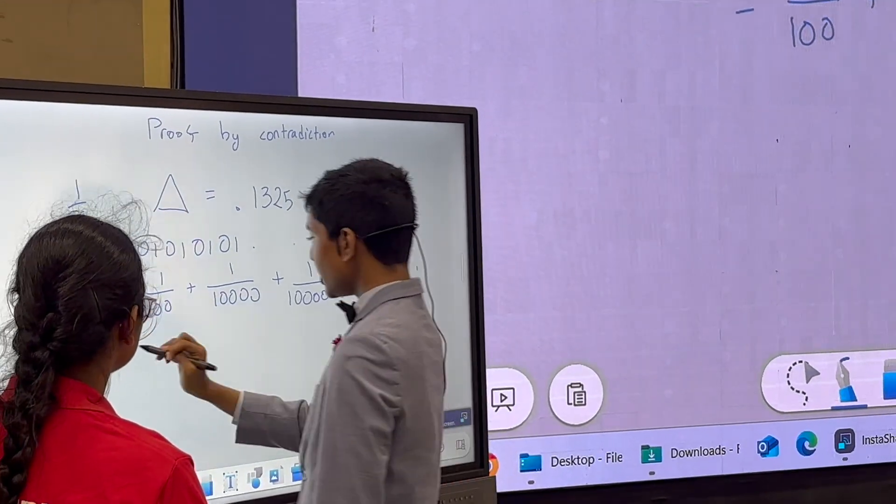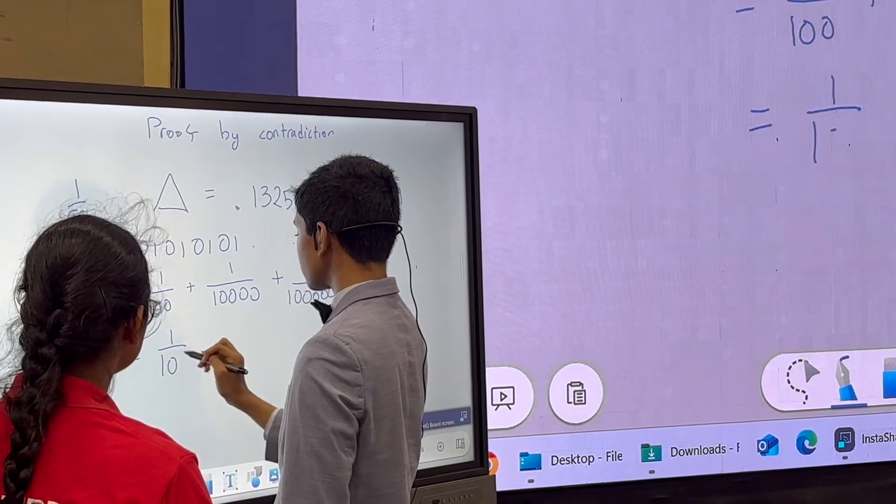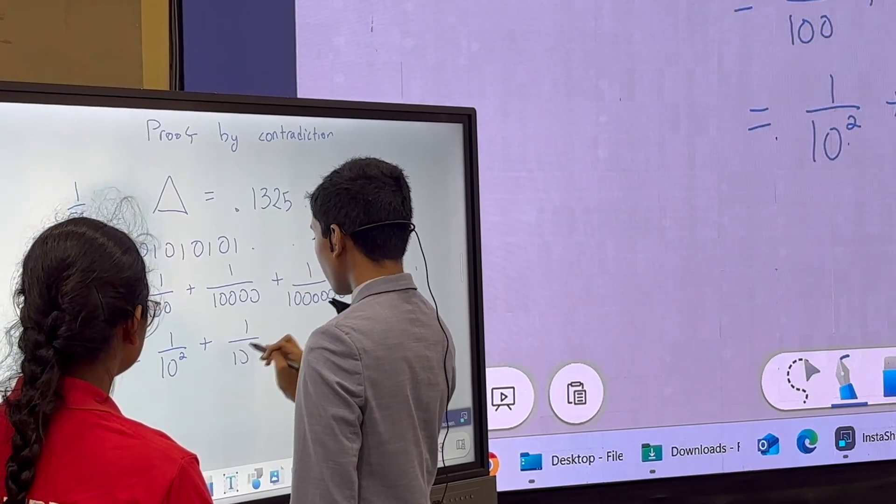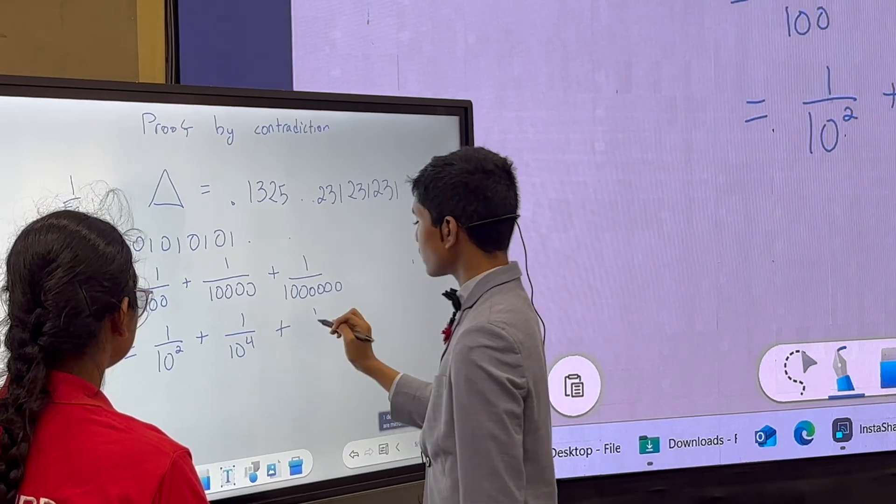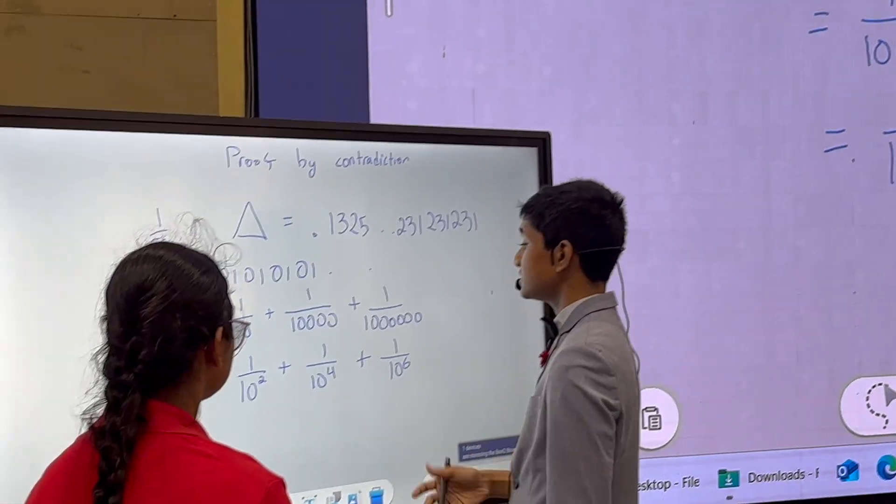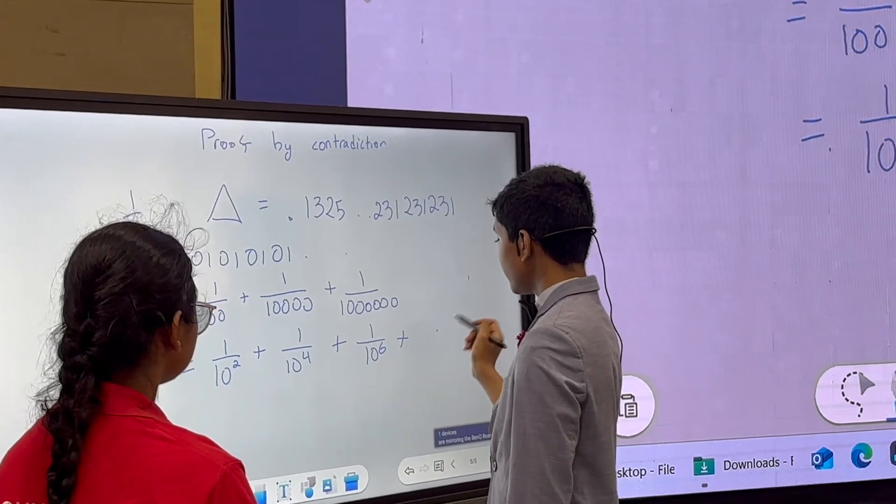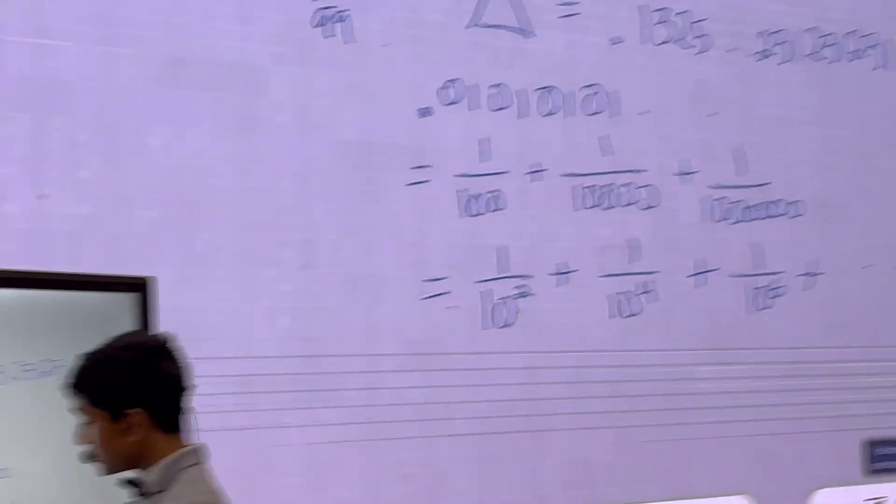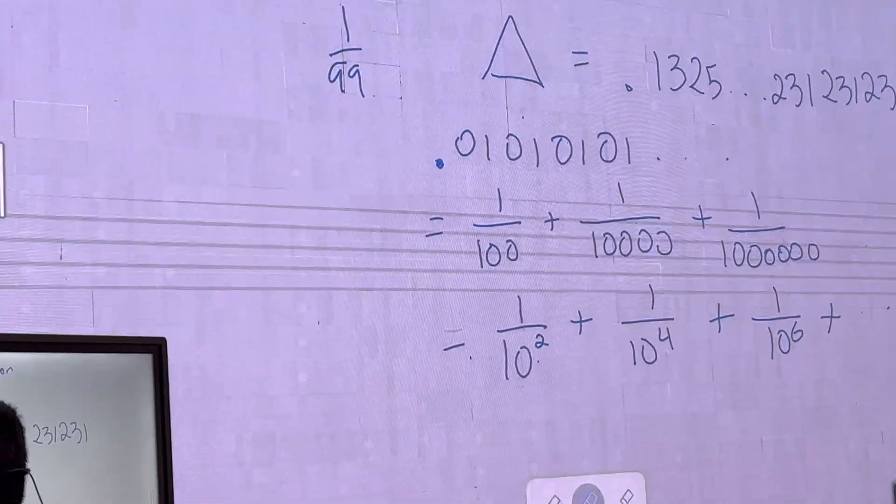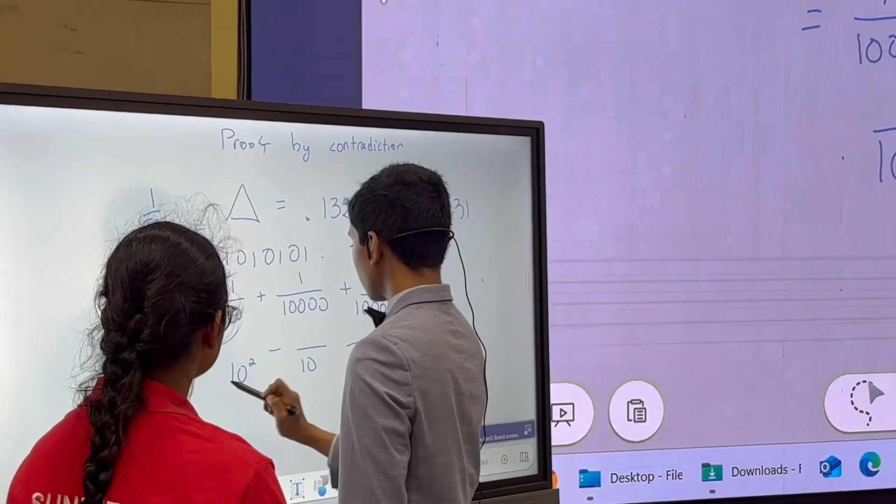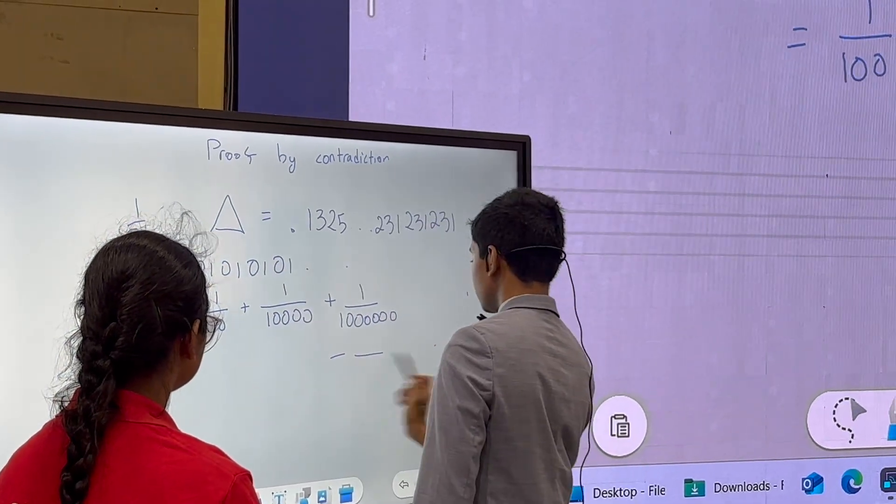You can probably see the connection, because if I rewrite this as powers of 10, you get 1/10^2 plus 1/10^4 plus 1/10^6, and so on. And actually, this is just a geometric series. So now, let's say we have an irrational number that's like this somehow.